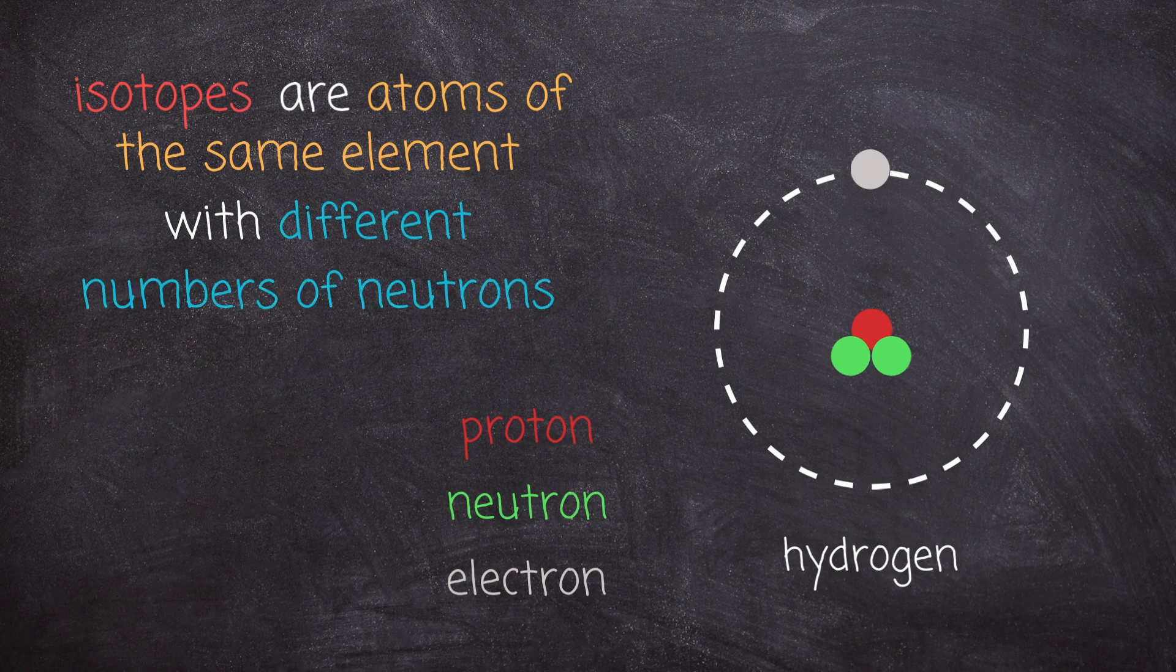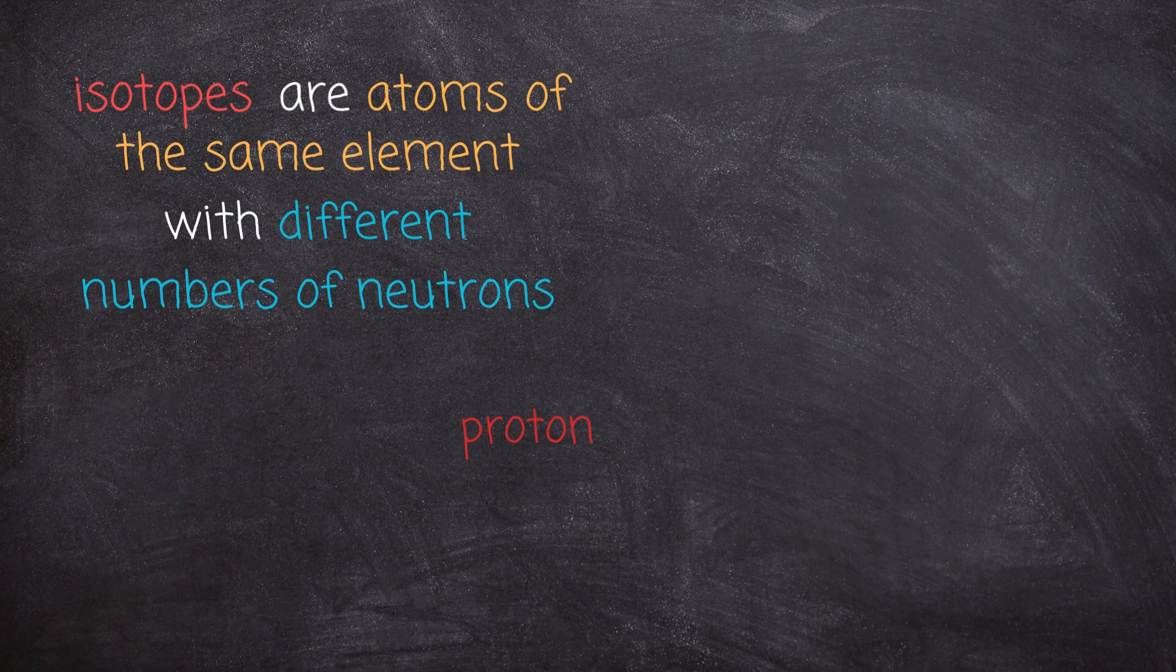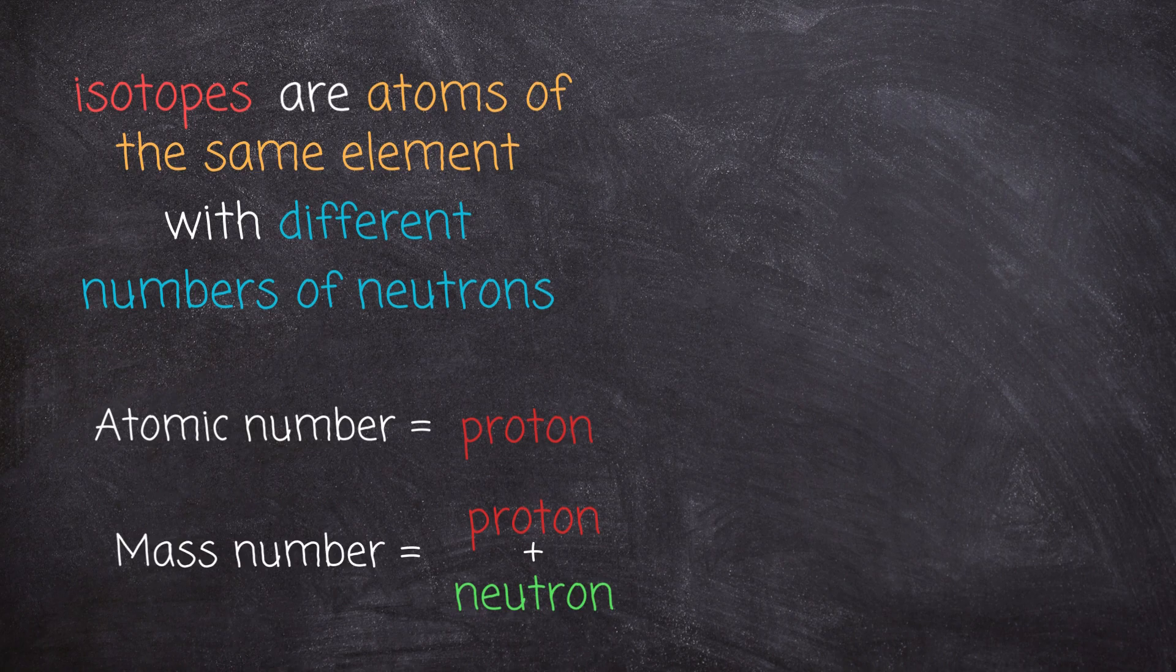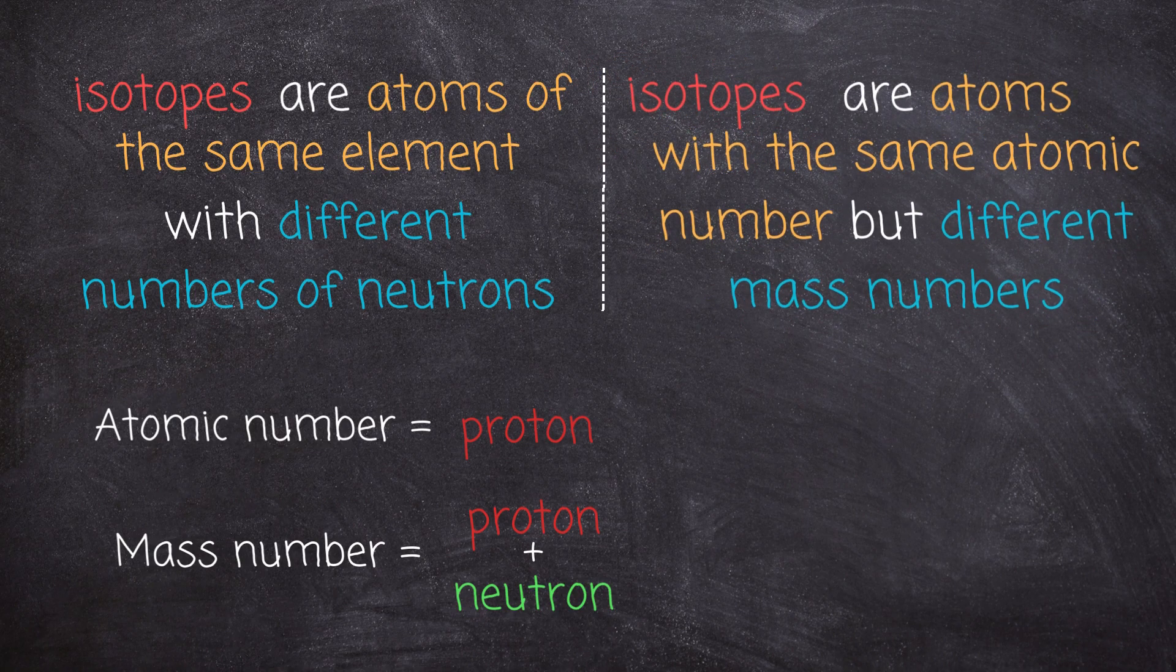The number of protons in a nucleus is referred to as the atomic number, and the number of protons plus neutrons is referred to as the mass number. So isotopes can also be defined as atoms with the same atomic number but different mass numbers.